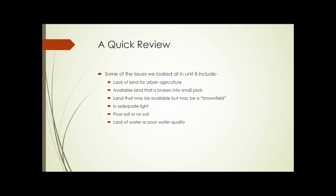Here's a quick review. Some of the issues we looked at in Unit 8 include the lack of land available for urban agriculture, land that is available but broken into small plots, or land that may be available but might be a brownfield, issues of adequate light, issues with poor soil or no soil, and lack of water or poor water quality.